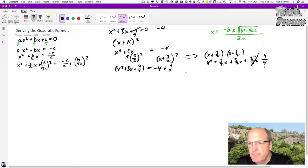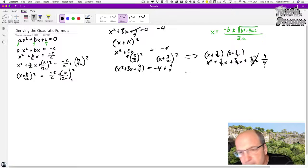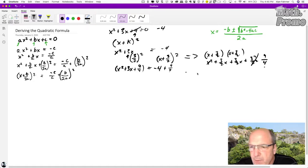Let's factor the left. So this is what we were trying to do. X plus b over 2a squared equals negative c over a plus b over 2a squared. All we did is we factored this right here.